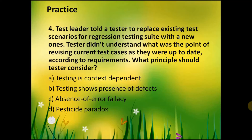Question four: a test leader told a tester to replace existing test scenarios for the regression testing suite with new ones. The tester didn't understand the point of revising current test cases as they were up to date according to requirements. What principle should the tester consider? The answer is D — pesticide paradox, because when the same test cases are used repeatedly, the chance that new defects will be found is very small.